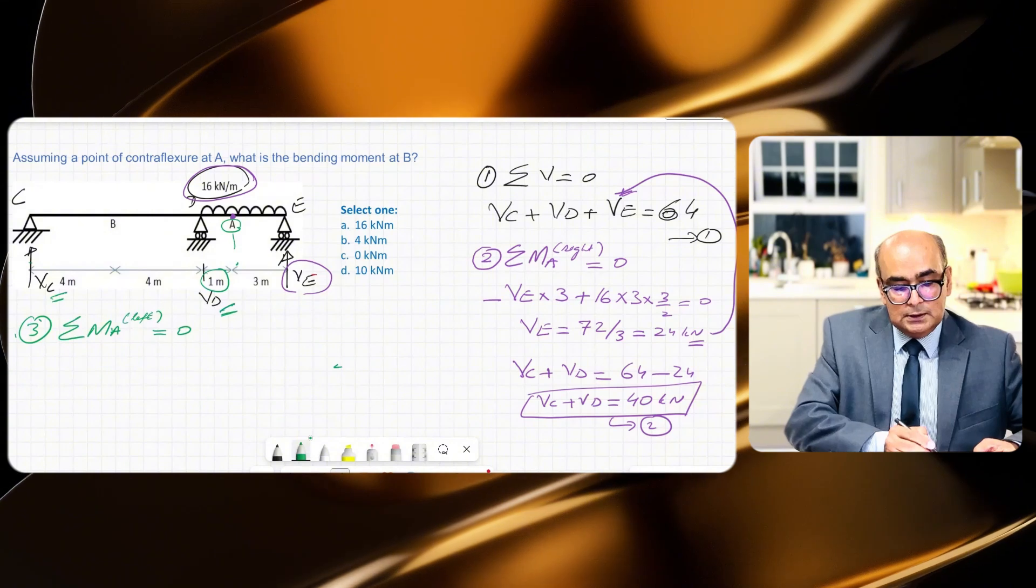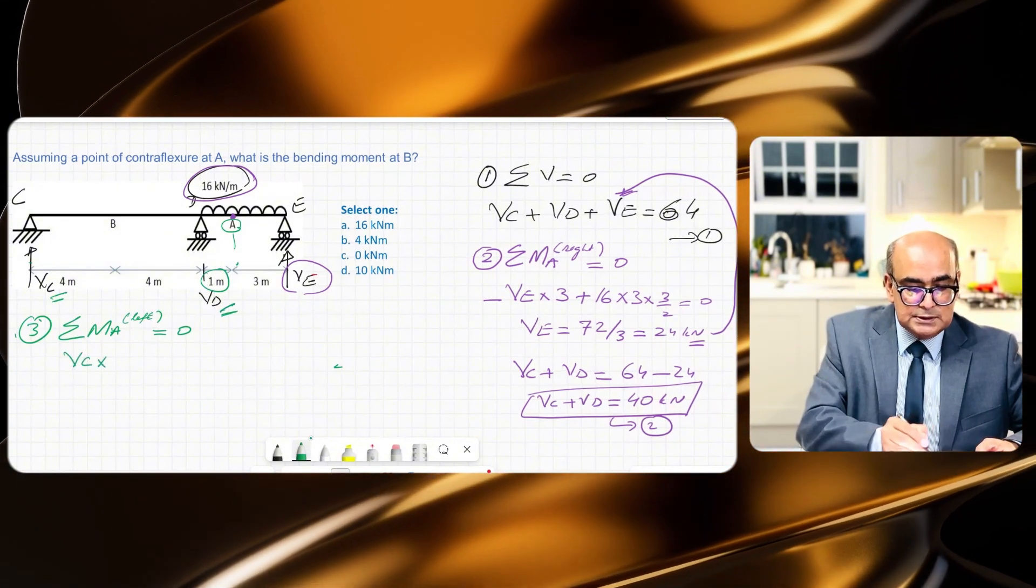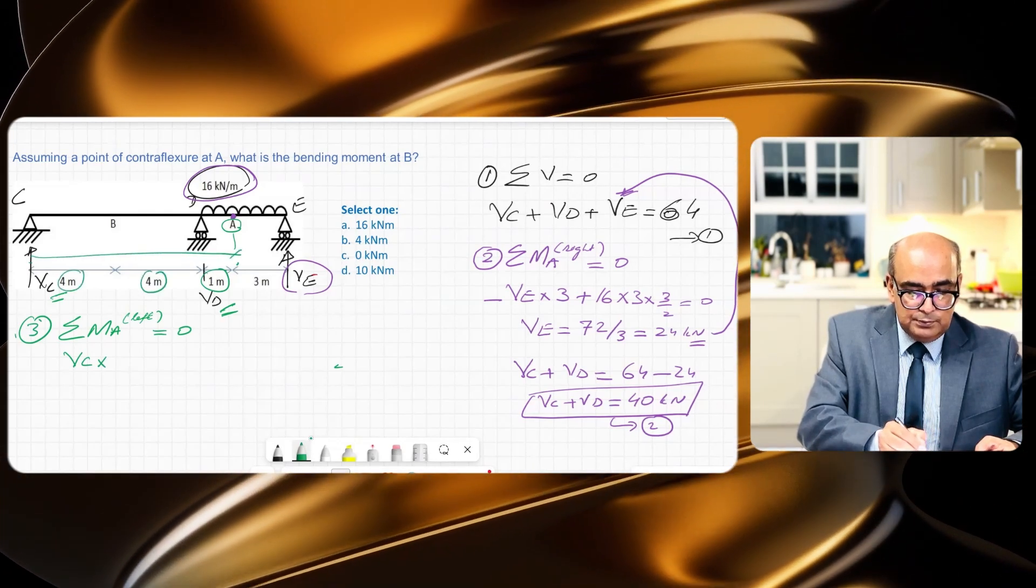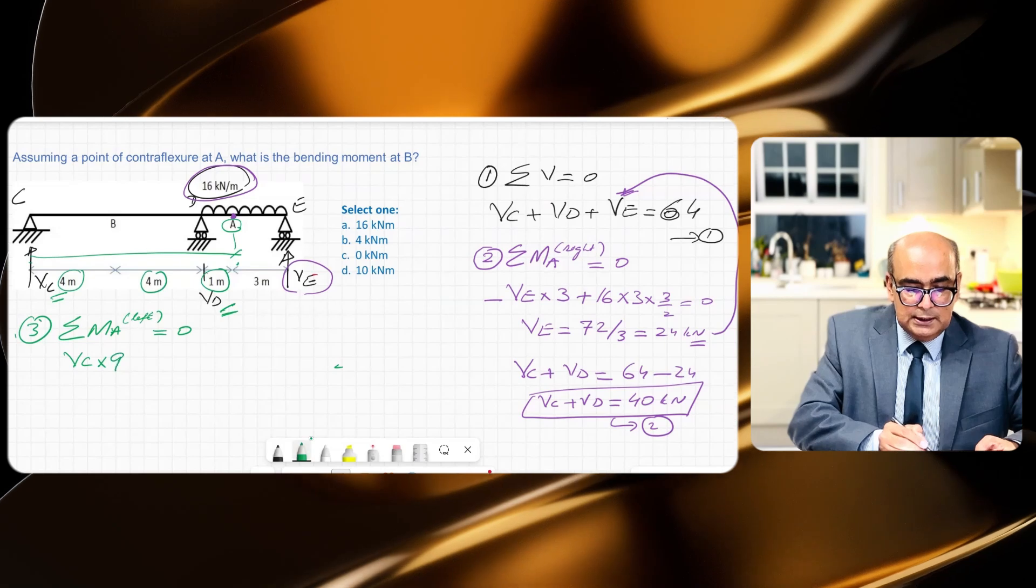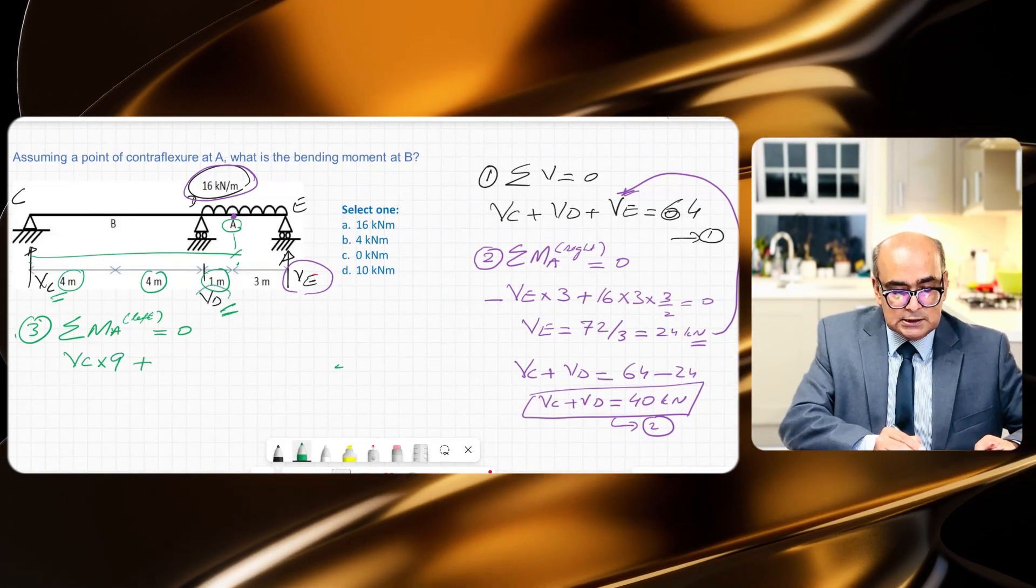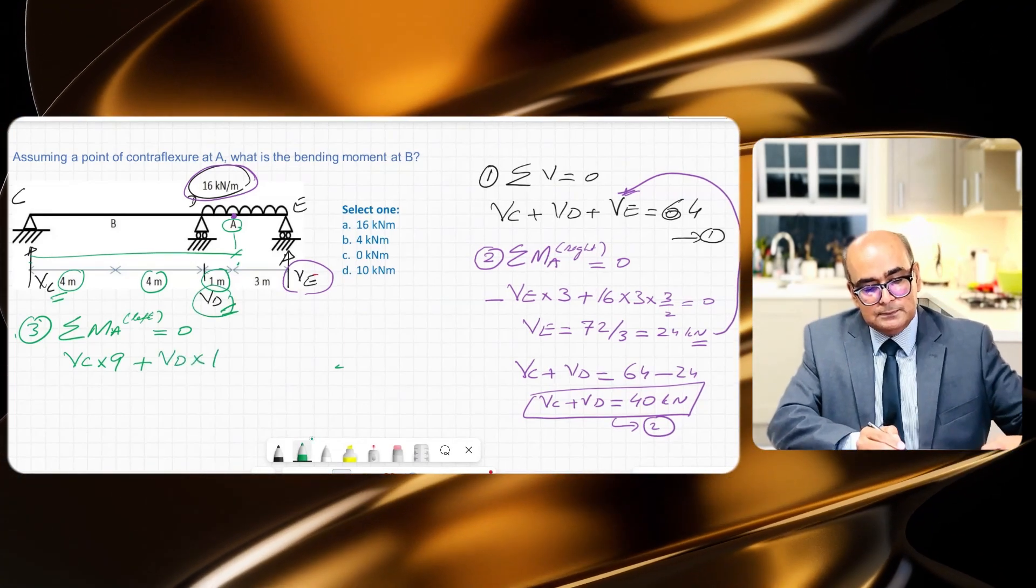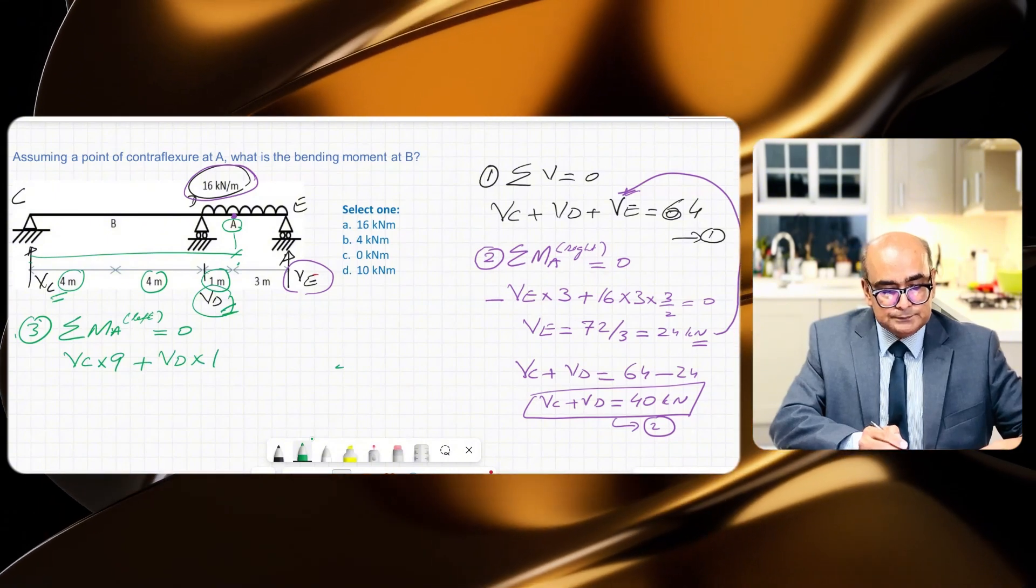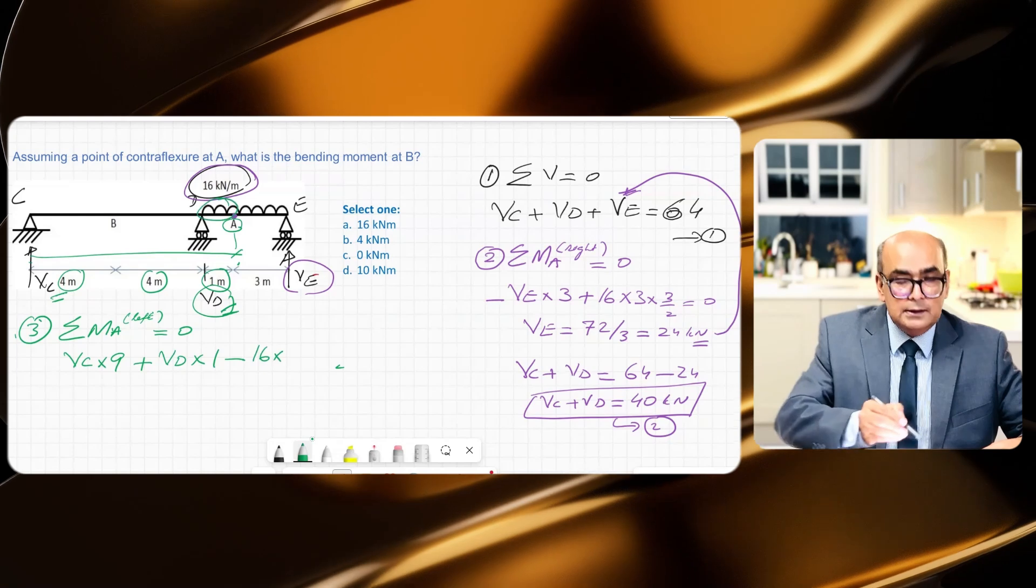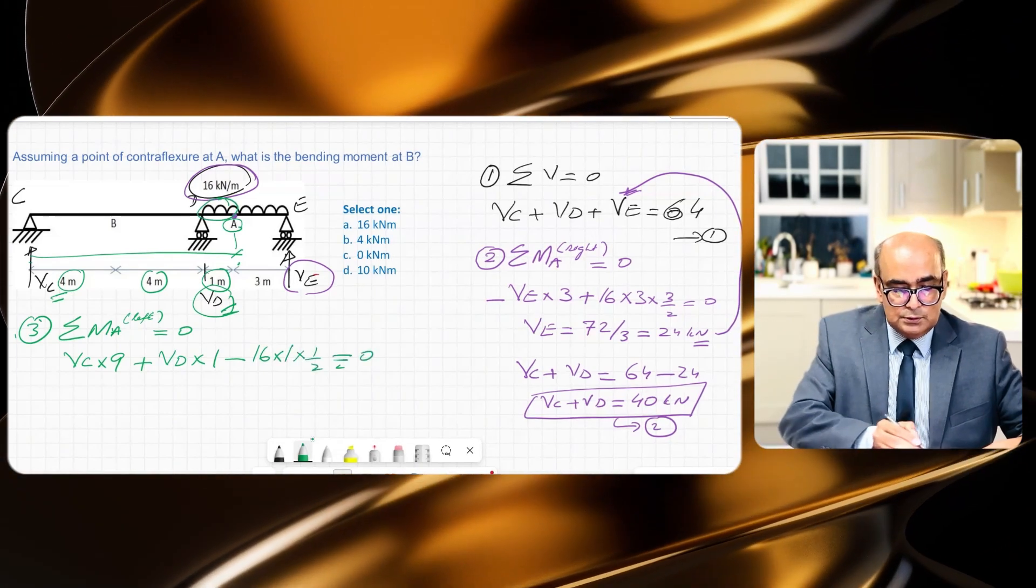So first VC. VC times distance from C to A is this 4 + 4 + 1, so that is 9. This is creating a clockwise moment. Plus reaction VD times 1, the distance between A and D is 1, take away 16 times, that is this load here, times 1 times 1 over 2 is equal to 0.